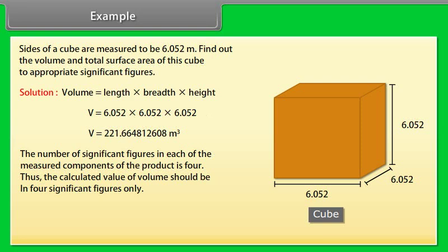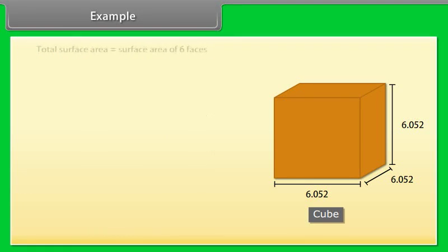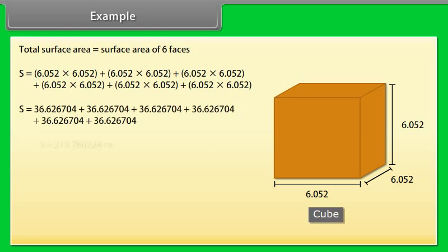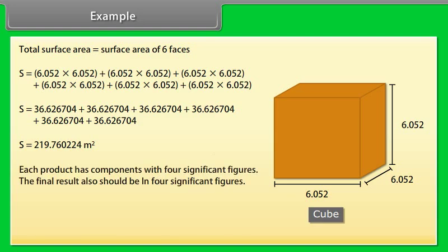Thus, V = 221.7 m³. Total surface area = surface area of six faces. After calculation, we get S = 219.76 m². Each product has components with four significant figures. The final result also should be in four significant figures. Thus, S = 219.8 m².